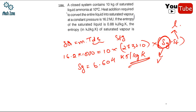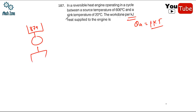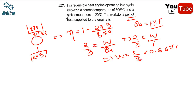An irreversible heat engine operates in a cycle between source temperature 879 K and sink temperature 293 K. Work done per kg of heat supplied (Q_added = 1 kJ): efficiency = 1 - 293/879 = 2/3. So W = (2/3) × 1 = 0.667 kilojoule. This is the answer.